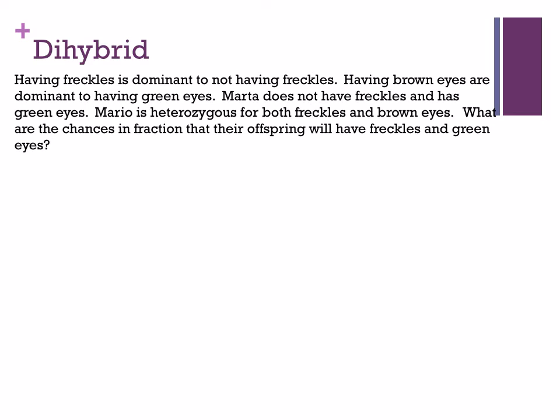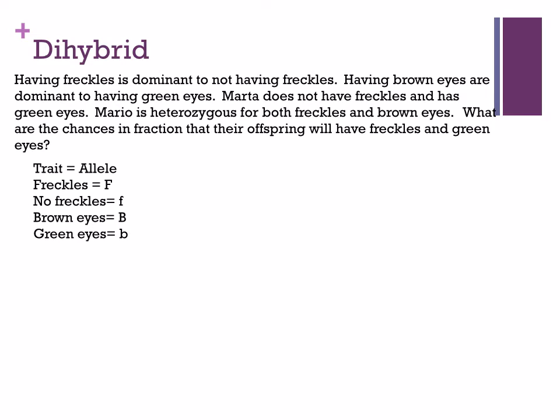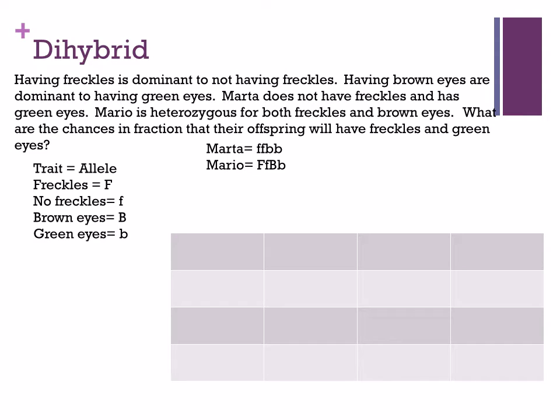Moving to the next dihybrid problem, we're looking at two traits again: freckles or not, and eye color — brown eyes versus green eyes. The first thing is to write down the traits and alleles. Freckles is dominant to not having freckles, and brown eyes is dominant to green eyes. Here, Marta has no freckles, so she's homozygous recessive for that, and she has green eyes, so she's also homozygous recessive. Mario is heterozygous for both freckles and brown eyes. When filling out the outsides of the dihybrid, remember you can use FOIL or a small Punnett square.